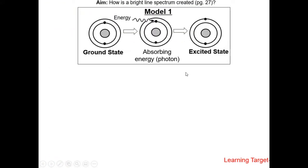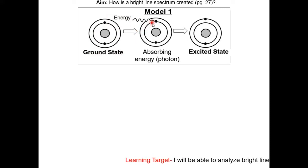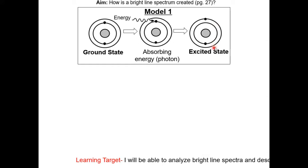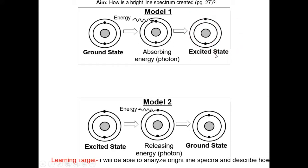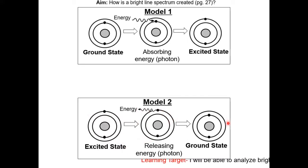Let's first review the ground state and excited state models. Here we have an atom in the ground state. An electron in the ground state absorbs some energy and jumps to a higher energy level — that atom is now in the excited state. If that electron releases energy, it falls back to a lower energy level, which is the ground state.